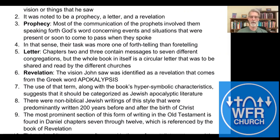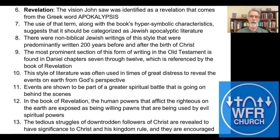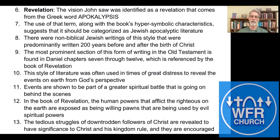The vision John saw was identified as a revelation, which comes from the Greek word 'apocalypsis.' The use of that term, along with the book's hyper-symbolic characteristics, suggests it should be categorized as Jewish apocalyptic literature. They had some types of literature we don't have now — prophetic literature, and in particular, this apocalyptic literature.